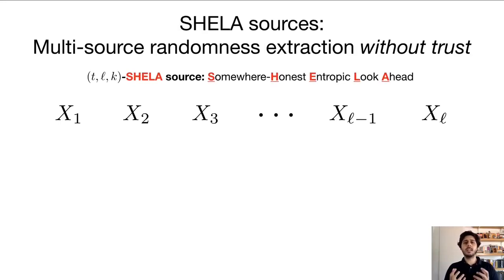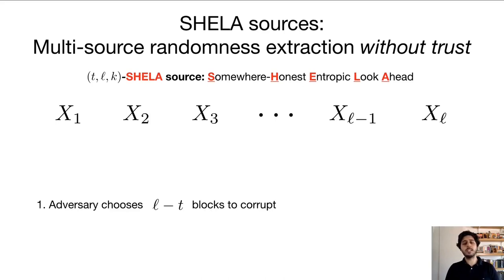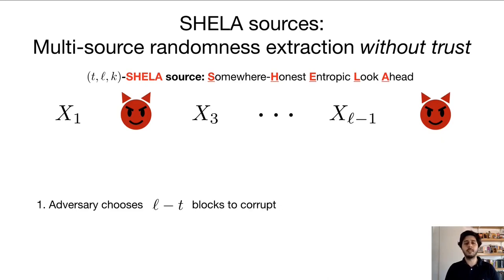The way we model this adversarial multisource setting is through what we call SHELA sources, where SHELA stands for Somewhere Entropic Lookahead. A SHELA source is composed of L weak sources, which we'll call blocks to avoid confusion. We may assume that these blocks are all independent and have k bits of min entropy, but then we allow an adversary to choose L minus T blocks to be corrupted. For example, the adversary could corrupt x2 and xL, so T stands for the number of honest or uncorrupted blocks in the SHELA source.